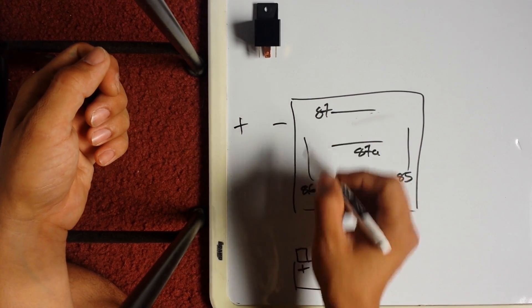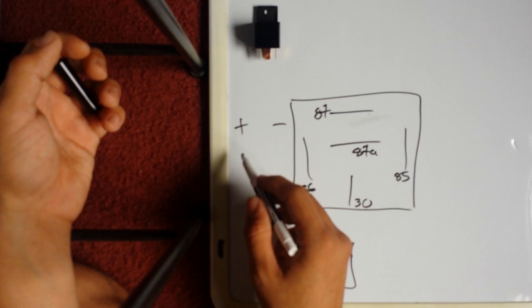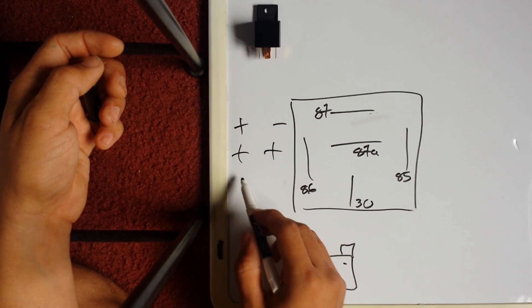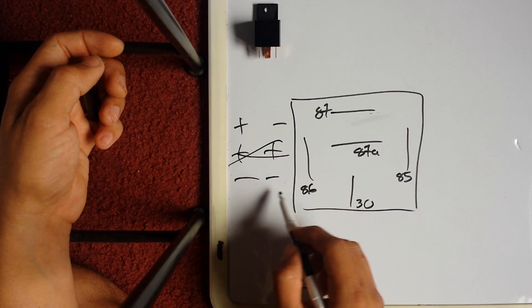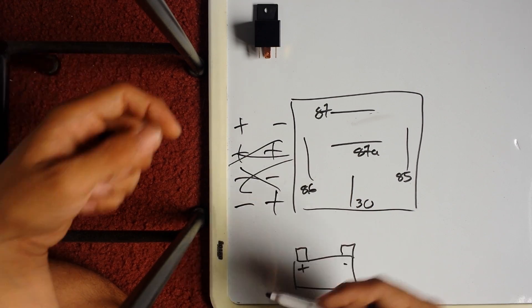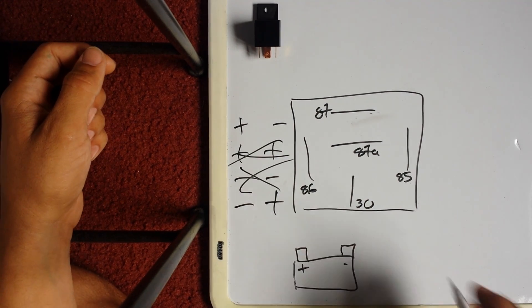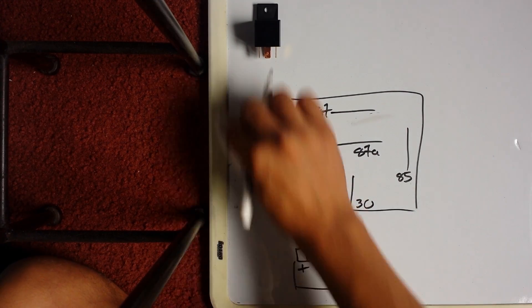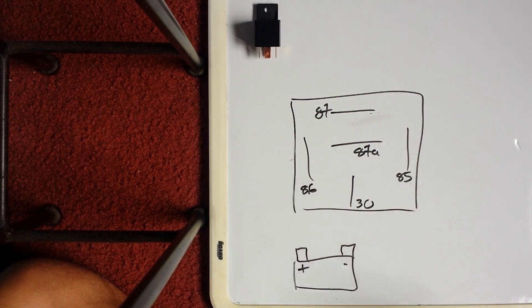As long as you have a positive and a negative, the electronic works. If you put positive to positive, nothing's gonna happen. If you put negative to negative, nothing's gonna happen. You need positive and negative to get power.